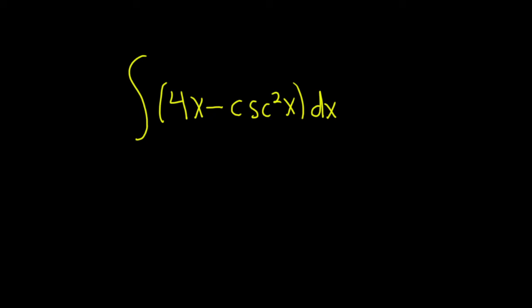Hello, in this problem we're going to find the indefinite integral. So we have the indefinite integral of 4x minus cosecant squared of x. Let's go ahead and work through this solution.